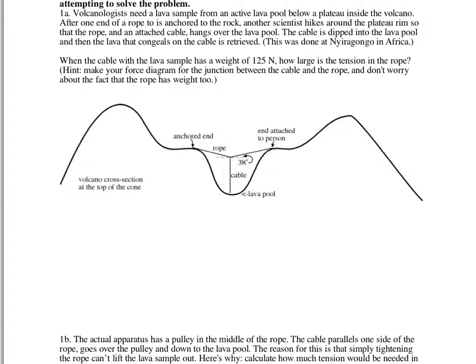For this one, you've got a cable suspended from a rope. The whole cable is the object you're looking at — not just the point up here, but the whole cable. So if you drew a force diagram for it, there are just three forces: one rope pulling here, one rope pulling here, and the weight of the cable pulling down.